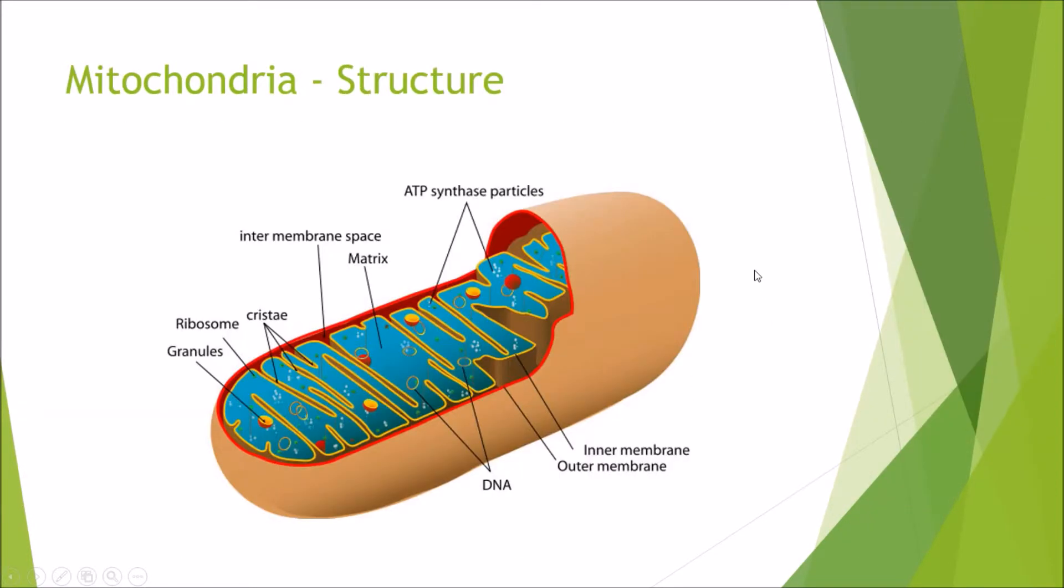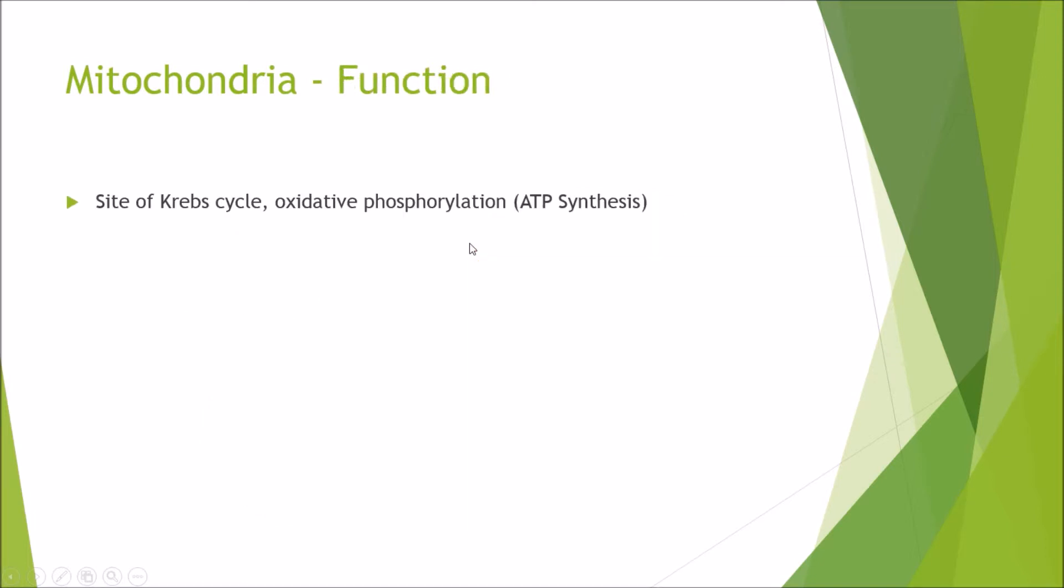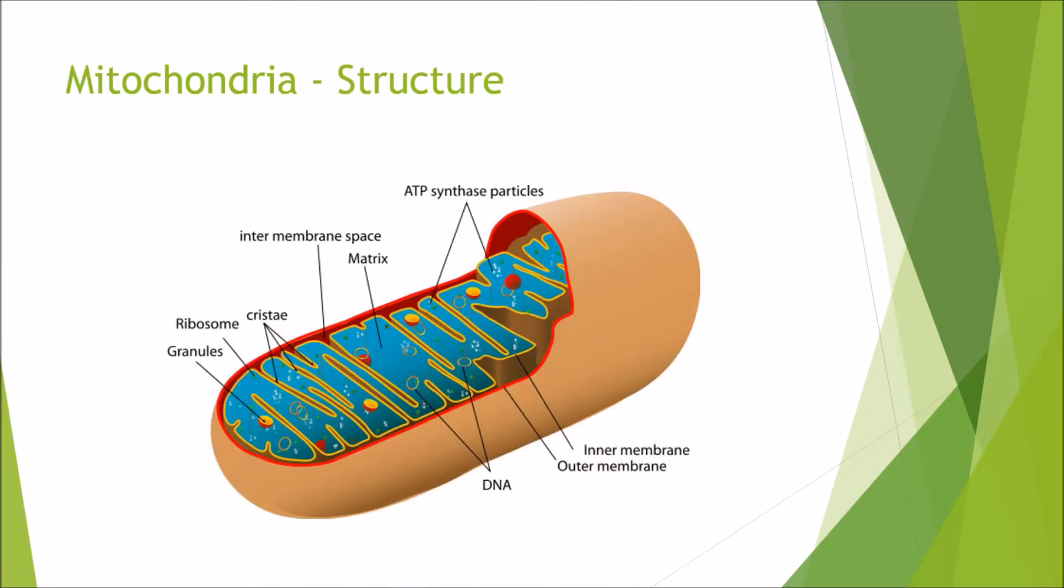So next we have the mitochondria. So the mitochondria is a weird sausage-shaped organelle with folds on the inside called cristae. And the main function of the mitochondria is the site of the Krebs cycle, oxidative phosphorylation, and ATP synthesis. So this organelle is like a battery for the cell. It is what produces all the energy required for the cell in the form of ATP.